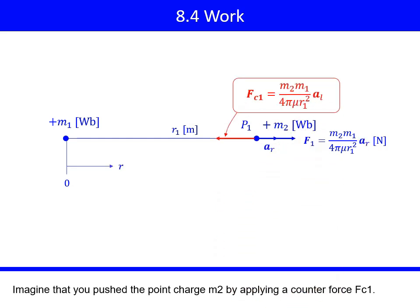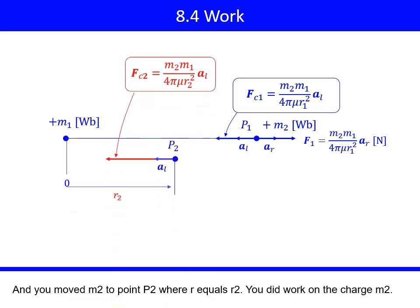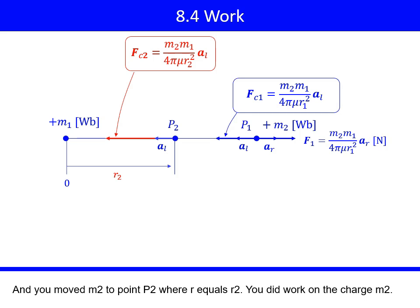Imagine that you pushed the point charge M2 by applying a counter force Fc1. AL is a unit vector directed from M2 toward M1, which is opposite to AR. And you moved M2 to point P2 where R equals R2. You did work on the charge M2.